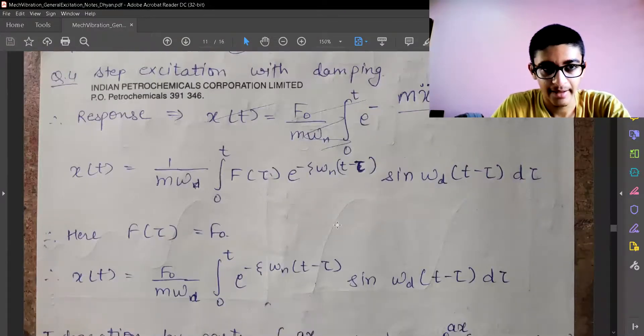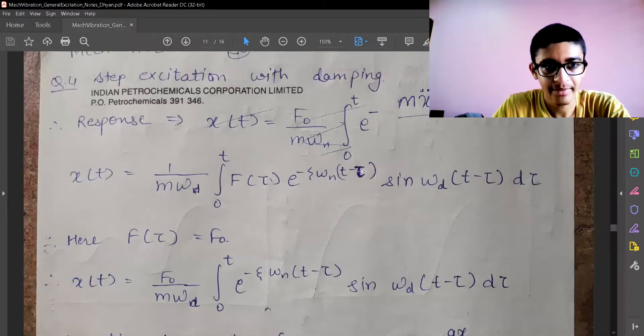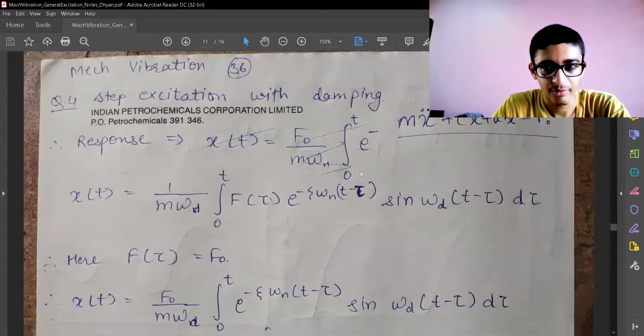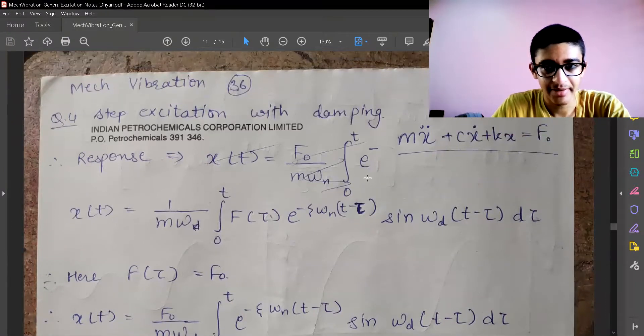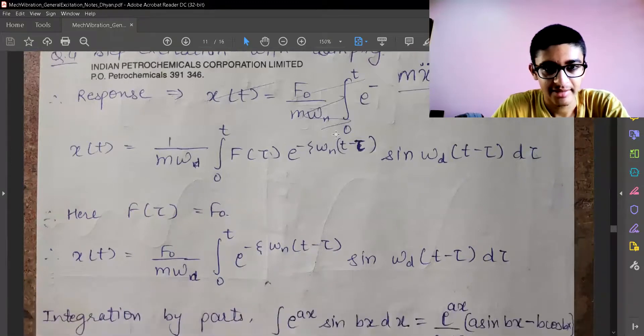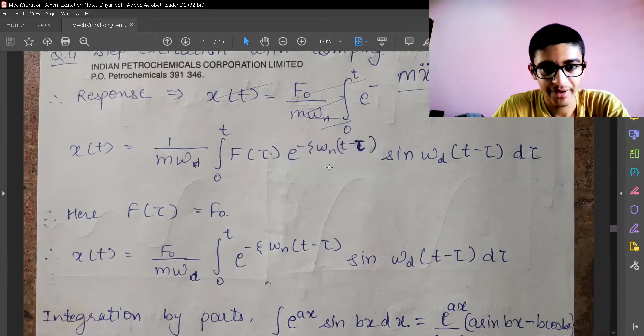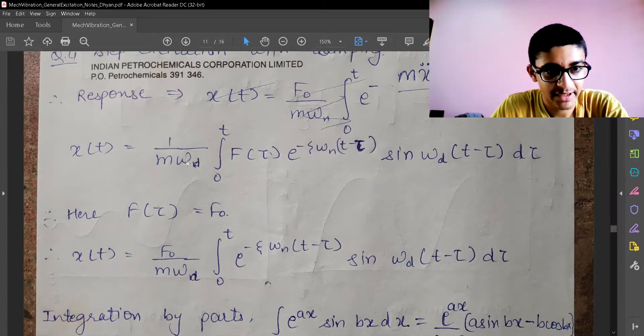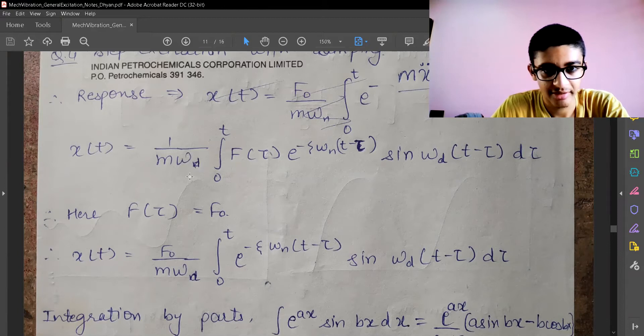Now let's see step excitation with damping. We are giving that excitation with damping and there is some time delay also. We have incorporated time delay and damping, and the effect of damping is whenever we had omega, we are changing omega_n by omega_d.